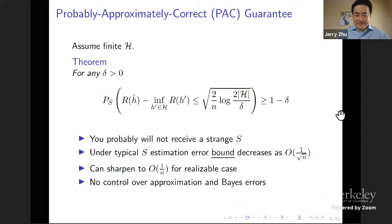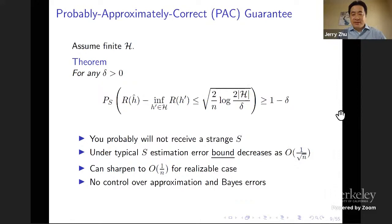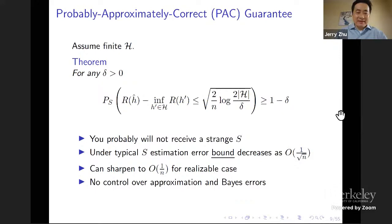This is a general PAC guarantee for the agnostic case where the hypothesis family may not contain the true h*. In the realizable case, you can sharpen this to 1/N — much faster than 1/sqrt(N). However, PAC learning guarantees don't control approximation error or Bayes error. So at the end of the day, R(h-hat) could still be quite large — say 50% error — and you'd have no control over that. All you have guaranteed is that your estimation error is close to zero.